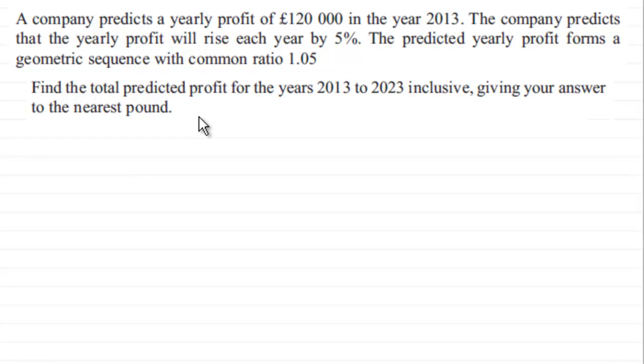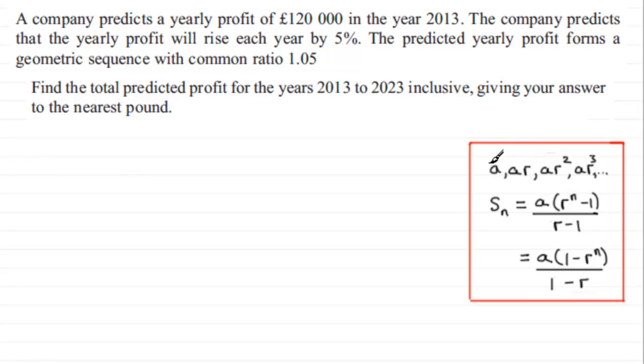And to do this what we've got essentially is to sum a geometric sequence. And you should be familiar with the idea that if your terms, the first term is a, second term ar and third term ar squared and so on, the sum of the first n terms is equal to a multiplied by r to the power n minus 1, all divided by r minus 1. Or you could multiply top and bottom here by negative 1 and get this alternative version for the formula.